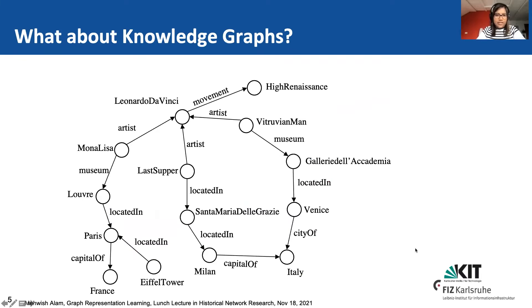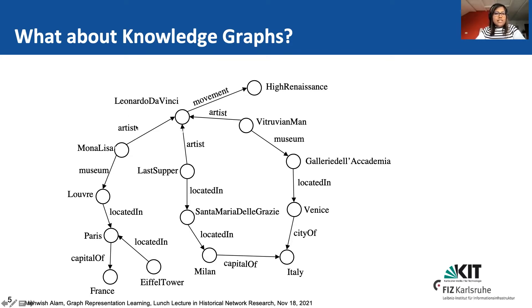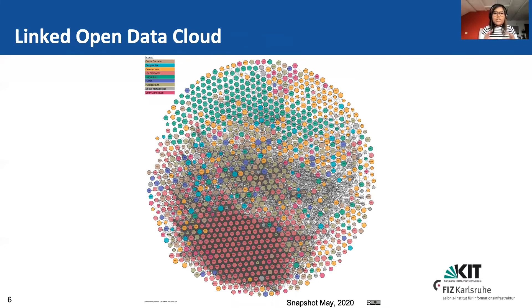What about this kind of graph? This is an example of a knowledge graph. I'm treating it as a directed labeled graph, where each node represents one entity, and there is a directed edge towards another entity. The relation is also labeled. This knowledge graph has connections within itself, but entities also connect to other knowledge graphs like DBpedia and Wikidata, giving rise to this web of data — the Linked Open Data Cloud you see here. Each circle represents a dataset and each color represents one domain.